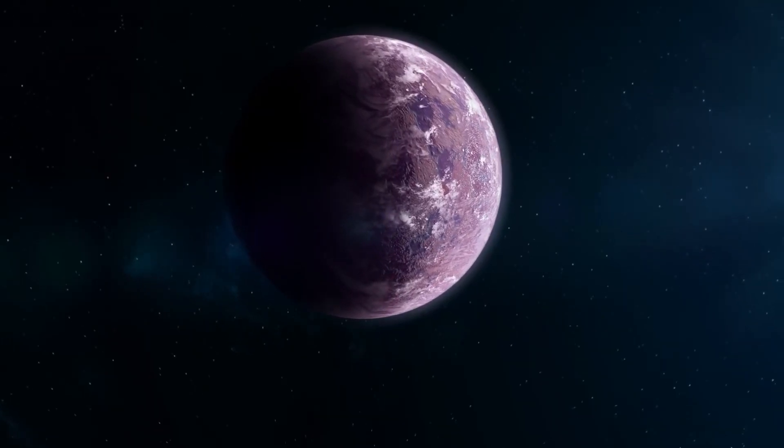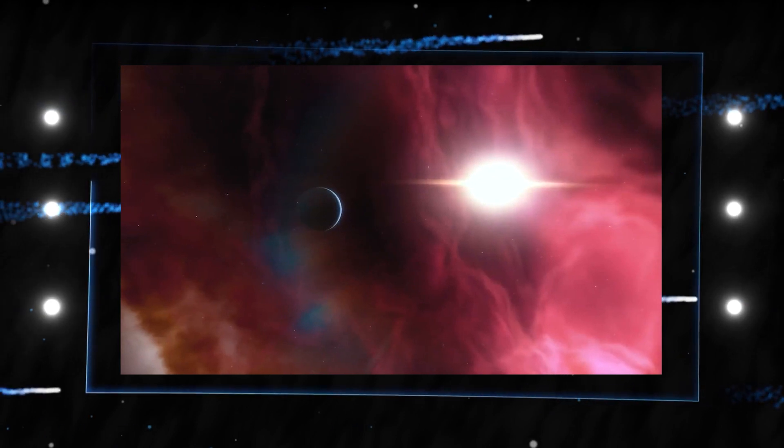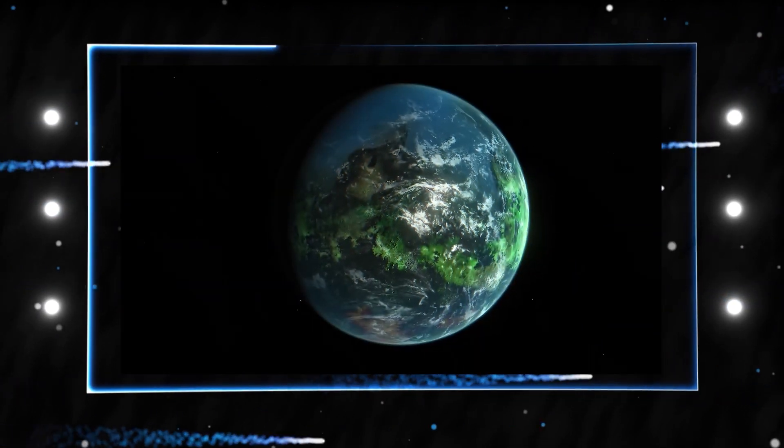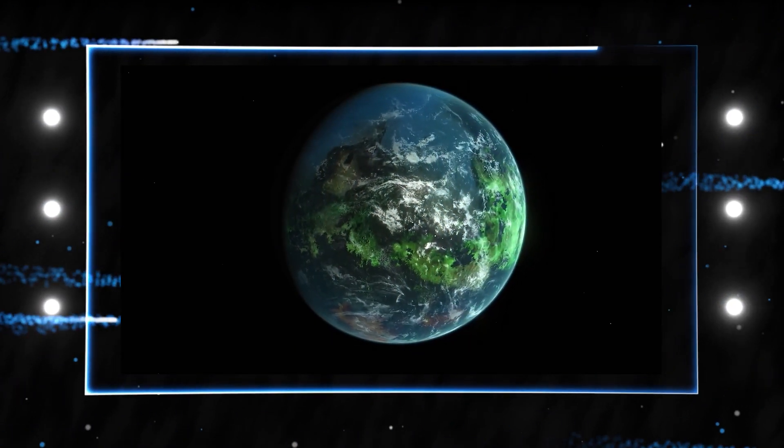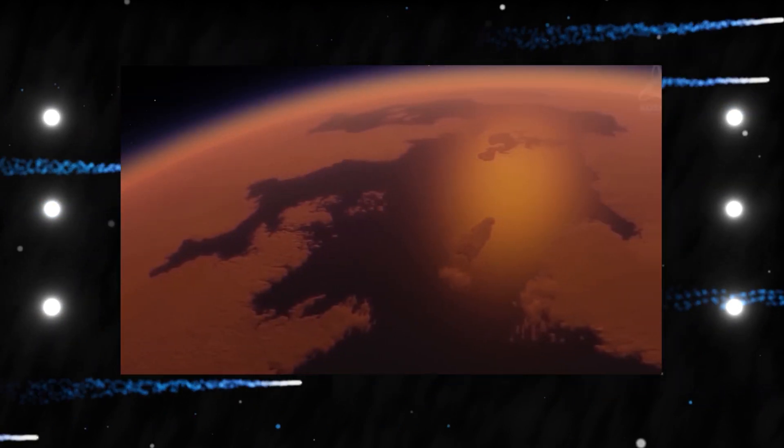Previously, scientists believed that this exoplanet, which is in its star's habitable zone, had a minimum mass of about 1.3 Earth masses. The new measurement suggests that Proxima b may be even more similar to Earth, at least in size, than previous observations suggested.